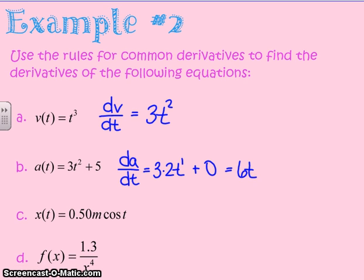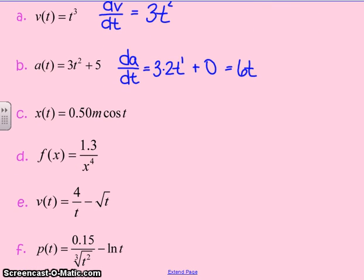This next example has a cosine in it. X of t is 0.5 meters times cosine of t. Anytime you have a constant in front of that function, the derivative is that constant times the derivative of the function. So dx/dt is that constant, 0.5 meters times the derivative of cosine of t.